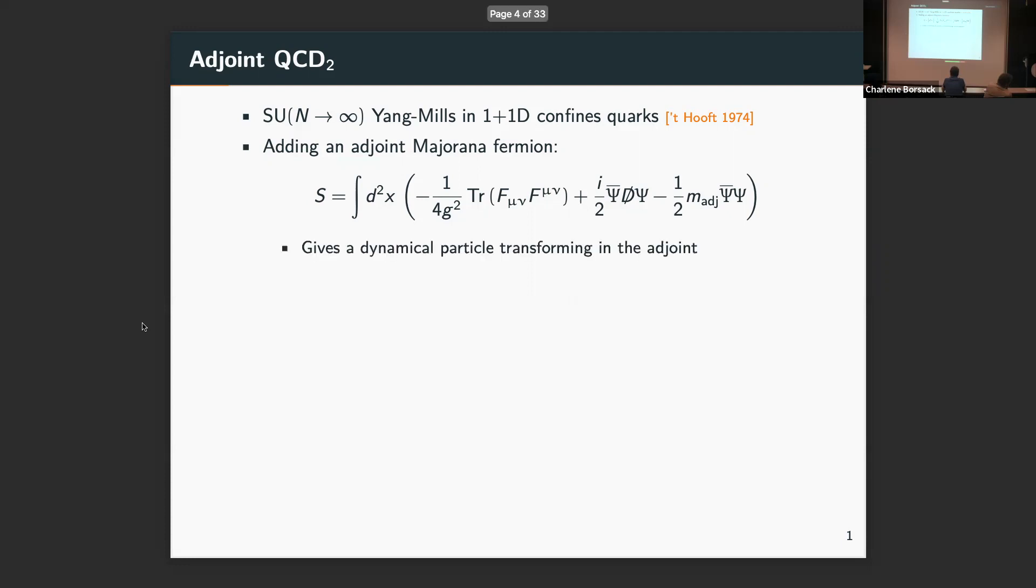We can consider adding a single adjoint Majorana fermion, this psi here, added to the gauge theory. So if we do this, now we have a dynamical particle transforming in the adjoint. We can think of it almost like a gluino. There's work going back to the 90s with David Gross and Igor, showing that sort of surprisingly, when you have a massless adjoint fermion, it will actually screen test quarks. So the effective quark-antiquark potential looks more like the plot here, leveling off at infinity instead of a confining potential.